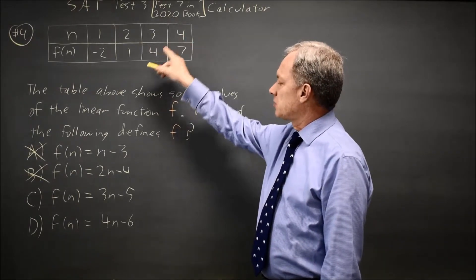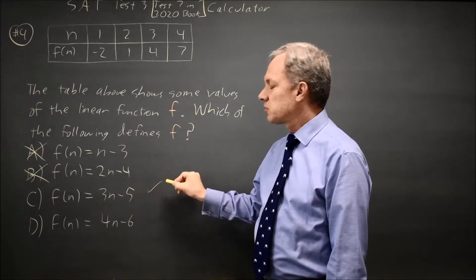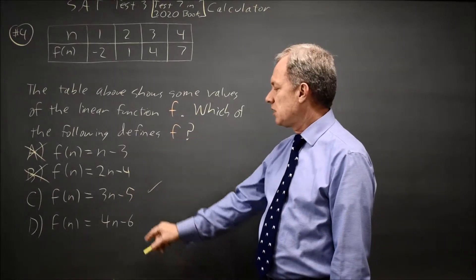Let's try n equals 4 in choice C. 3 times 4 is 12, minus 5 is 7. That matches, so it could be right, but that's not guaranteed. Let's try choice D.